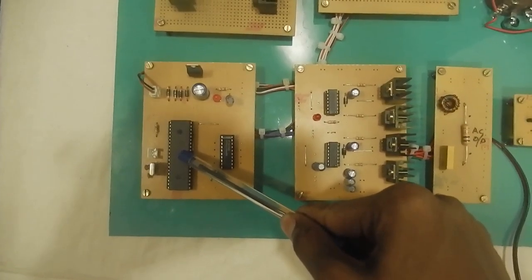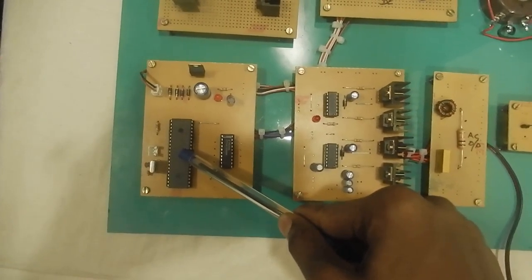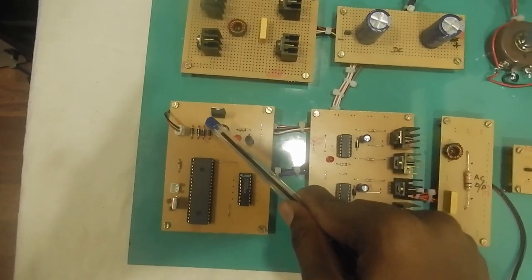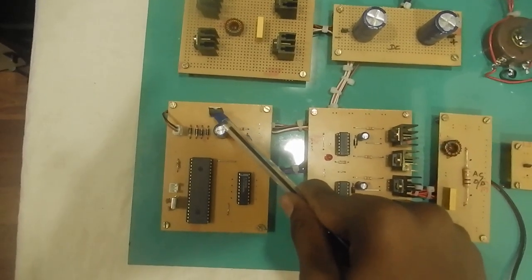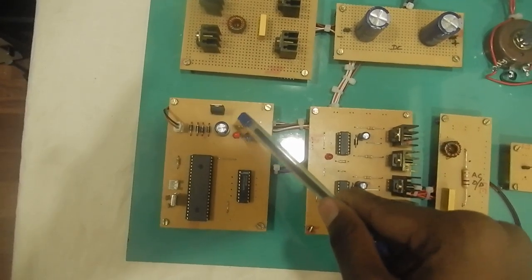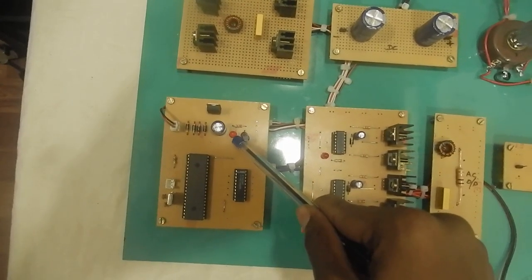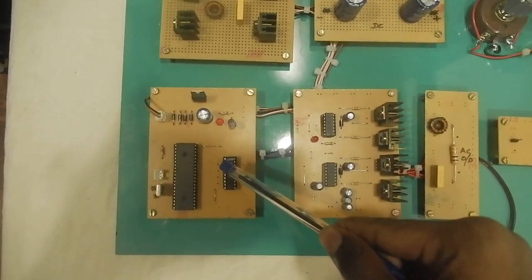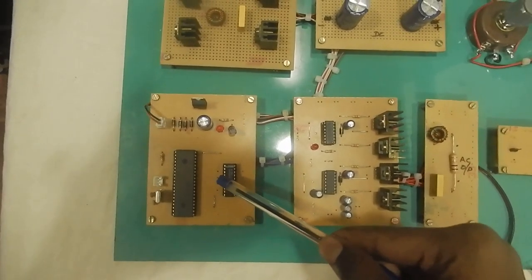To operate this IC we need a 5-volt power supply, so we are using a 7805 regulator. This is the LED power indication. The PIC current gain is very low, so we are going for a buffer.